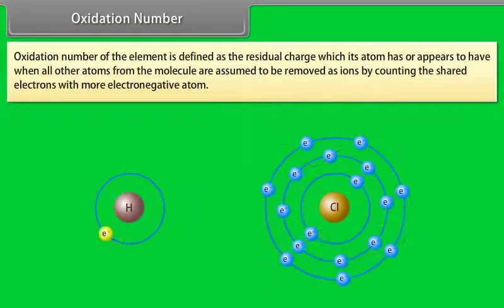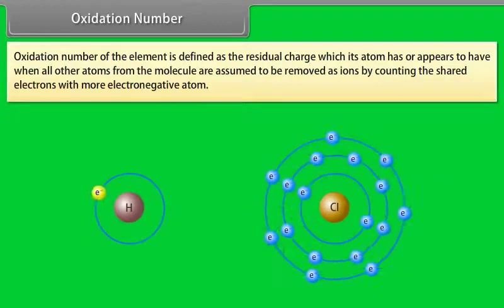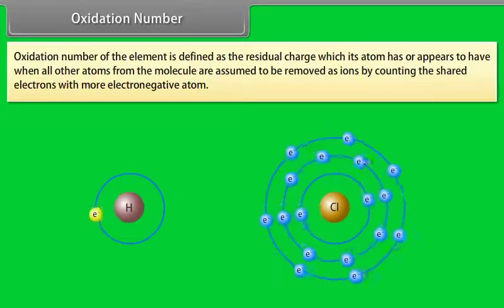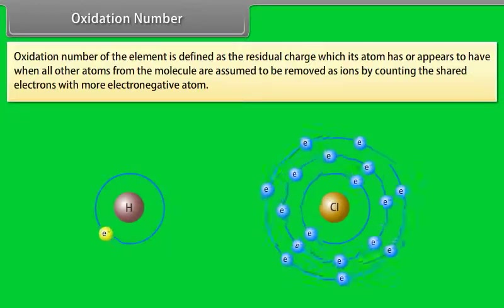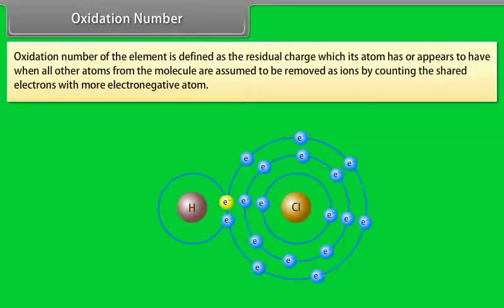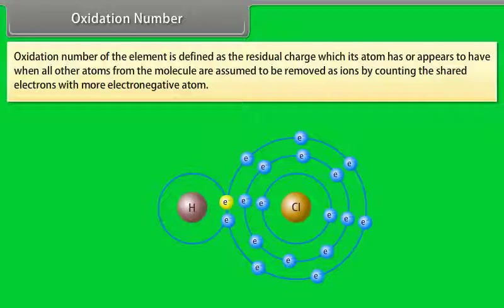Oxidation number of an element is defined as the residual charge which its atom has or appears to have when all other atoms from the molecule are assumed to be removed as ions, by counting the shared electrons with the more electronegative atom. For example, in hydrogen chloride, chlorine is more electronegative than hydrogen, so the shared pair is counted towards chlorine. Chlorine gets one extra electron and acquires a unit negative charge; hence, its oxidation number is −1. Hydrogen atom, without its electron, has a unit positive charge; hence, its oxidation number in HCl is +1.